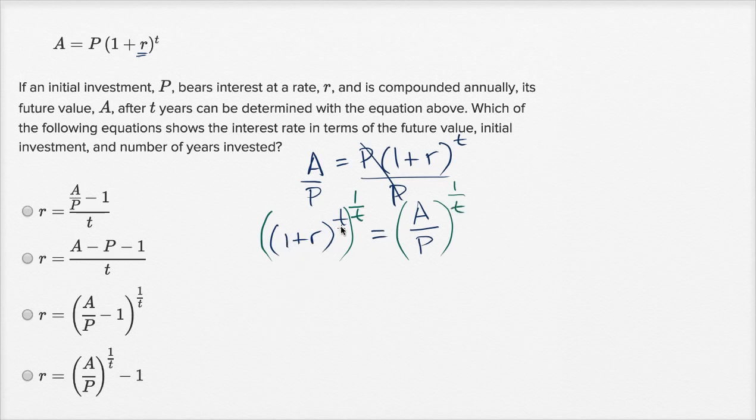On the left-hand side, if I raise something to the t and then raise it to the one over t, remember if you raise something to an exponent and then raise it to another exponent, you're raising it to the product of these two exponents. So this is equivalent to just raising one plus R to the first power, or this simplifies to one plus R on the left-hand side.